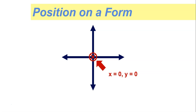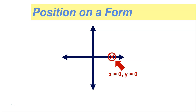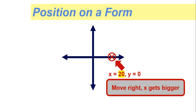If we moved that point to the right, we are affecting the x value, because the x value determines the left and the right of a particular point. If we moved it to the right, the x value will change — for example, to 20. So basically, if we move to the right, x gets bigger, and obviously the reverse is also true: if we move to the left, the x would get smaller.